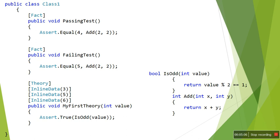Theory is used for running a particular test case multiple times. For example, my first Theory will run three times. Theory is used for such scenarios, while Fact is used like a standard test method.